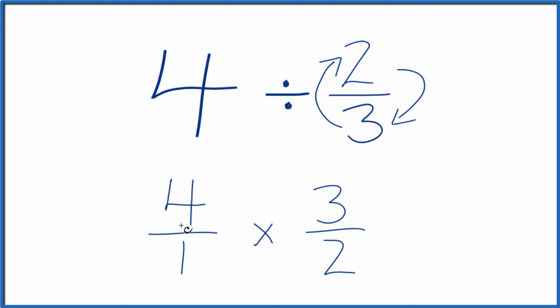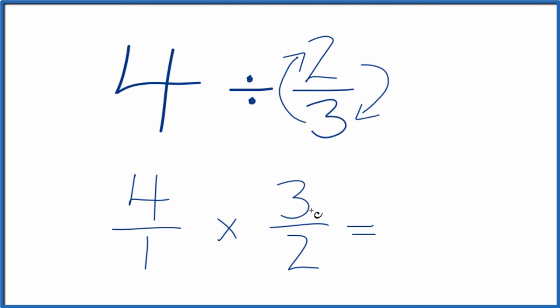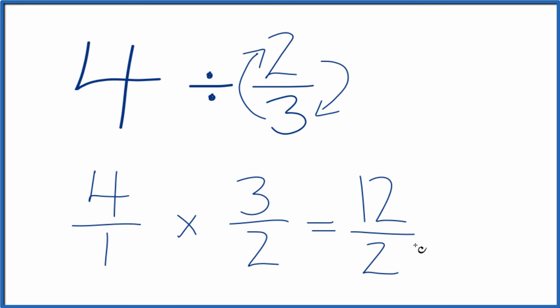Now when we multiply these fractions, we multiply the numerators and then the denominators. That gives us our answer. 4 times 3 is 12, and 1 times 2 is 2. We can divide 12 by 2, and that'll give us 6.